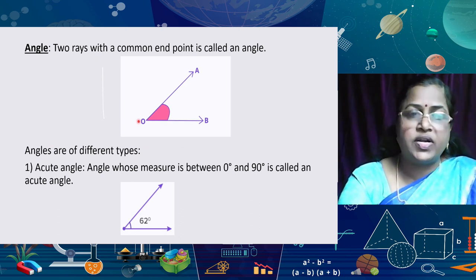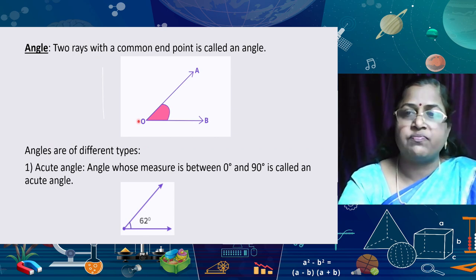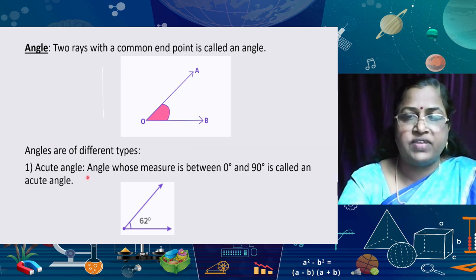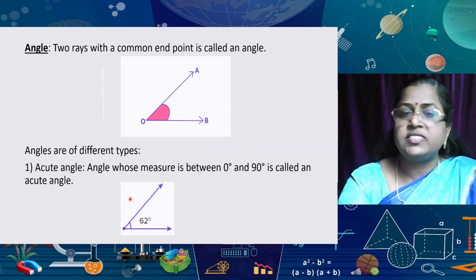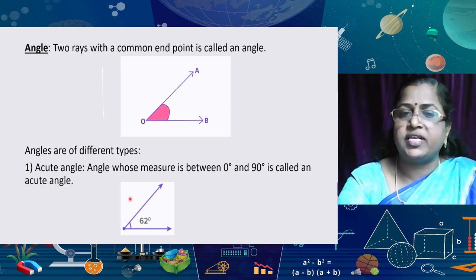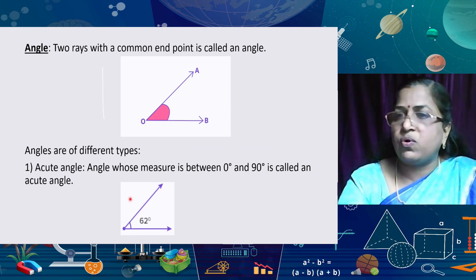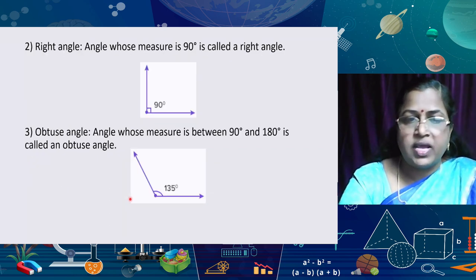We have already studied different types of angles. Starting from acute angle: an angle whose measure is between 0 degrees and 90 degrees is called an acute angle. Here we are given a 62-degree angle — it lies between 0 and 90. We can take many examples: 30°, 45°, 50°, 60°. All angles which lie between 0 and 90 are called acute angles.